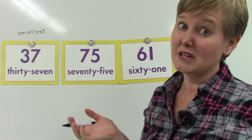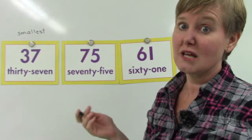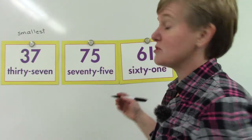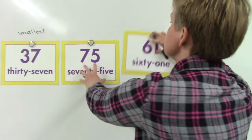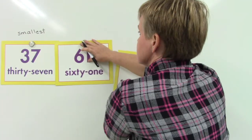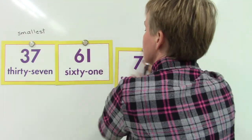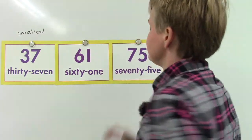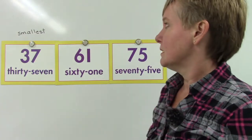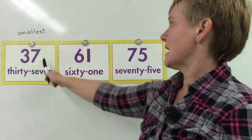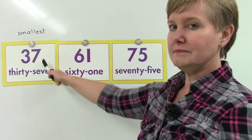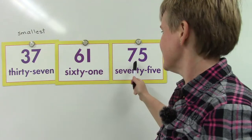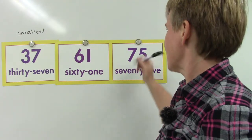Which one's smaller? That's a pretty easy question. It would be the six, which represents six groups of ten, or 60. And this number is 61. So I have 37, 61, and 75.